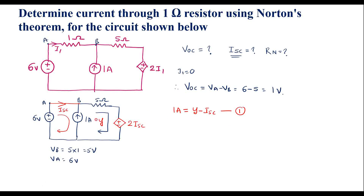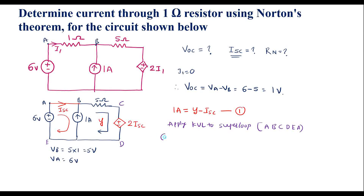Now applying KVL to the super loop (removing the 1 amp current source), the super loop is A–B–C–D–E–A. The KVL equation gives: 6 = 5Y + 2·ISC. This is equation 2.